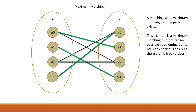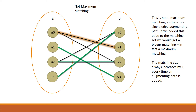A maximum matching is a matching set which contains the greatest possible number of edges. A matching set is maximum if no augmenting path exists. This is not a maximum matching as there is an augmenting path — just a single edge from U0 to V1.